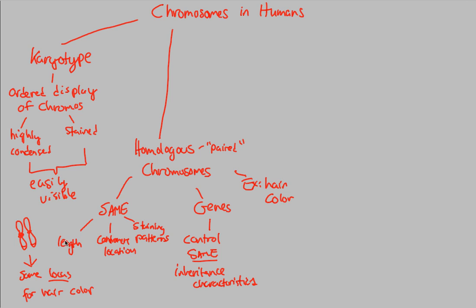The only caveat is that both homologous chromosomes might not have the exact same version of that characteristic — that's considered the allele type. We won't talk too much about that. Just understand that homologous chromosomes are paired chromosomes that have this idea of sameness. Homologous chromosomes are often considered a homologous pair; one would be called a homologue. So one is one homologue and the other is its homologue — they have the same locus for hair color. Your textbook has even better figures on that.